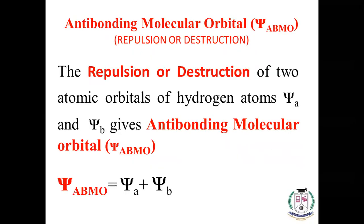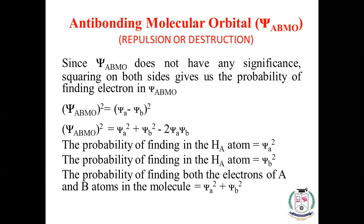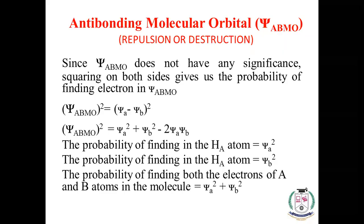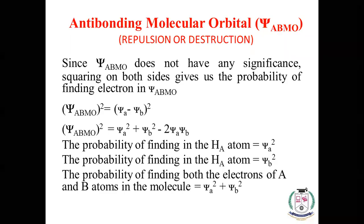For the anti-bonding molecular orbital: due to repulsion or subtraction of two atomic orbitals, psi ABMO = psi A − psi B. Squaring: psi ABMO² = psi A² + psi B² − 2·psi A·psi B. The probability of finding the electron in ABMO contains the term −2·psi A·psi B, meaning electron density between the two nuclei is reduced. This means higher energy compared to the atomic orbitals — ABMO is less stable.